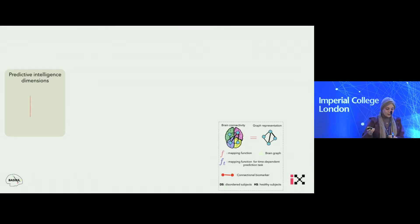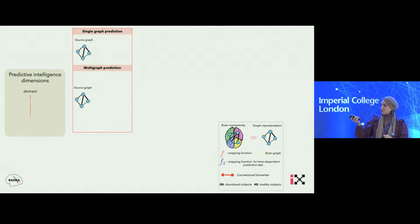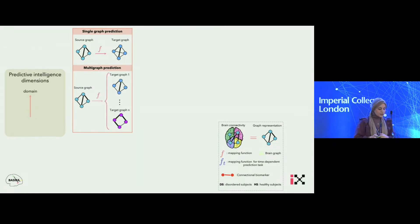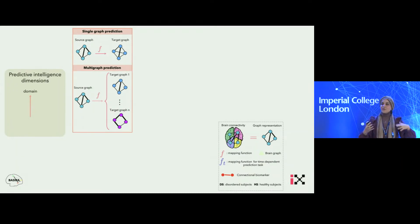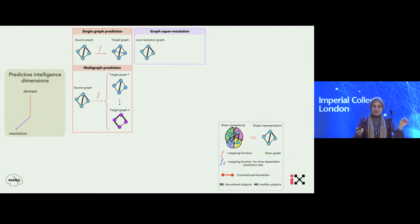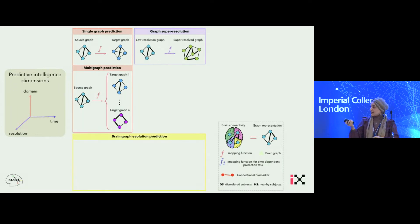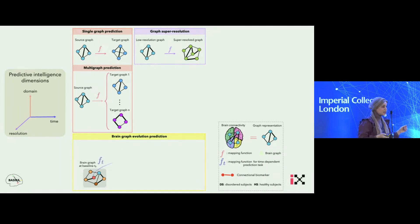Given a source brain graph that is affordable, we aim to predict a costly brain graph in the target domain — for example, functional connectivity from morphological. We also solve the problem of multi-graph prediction, where we predict multiple graph representations of your brain network across costly domains from an affordable representation, and at different scales — super-resolving the brain at higher scales from a low-resolution graph. We are also able to predict the full evolution trajectory of the brain connections over time from a single acquisition.